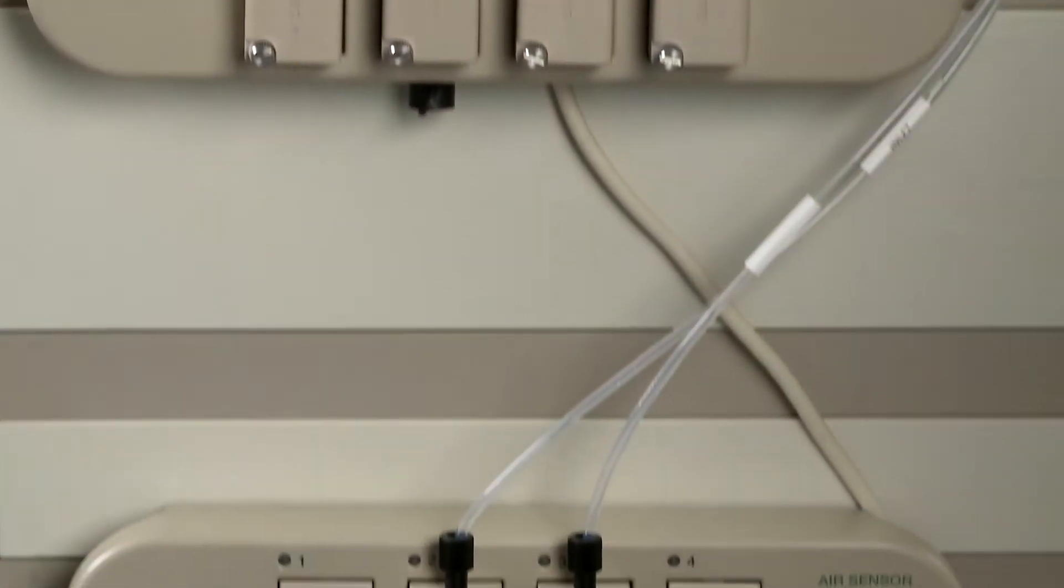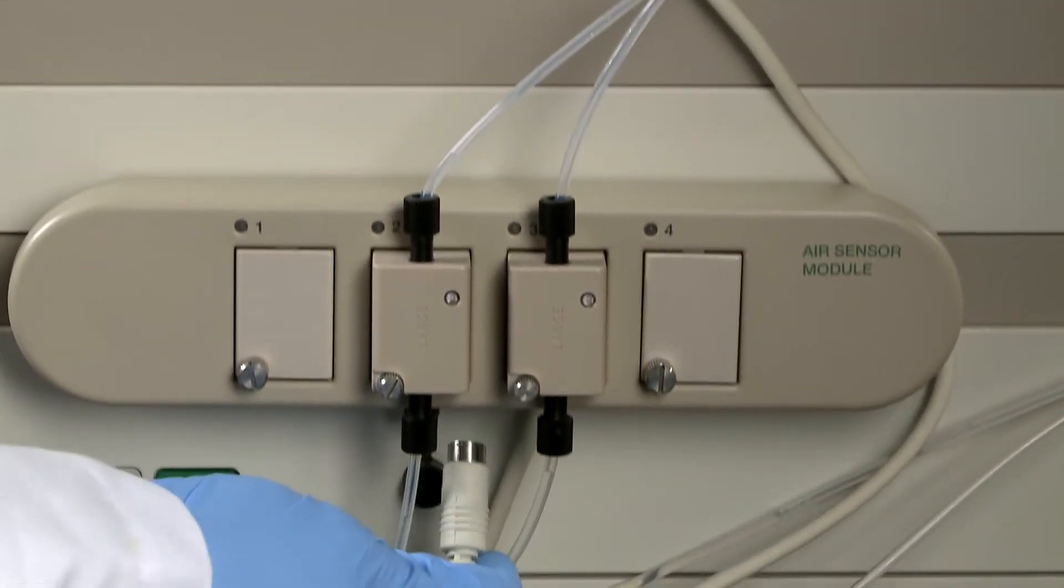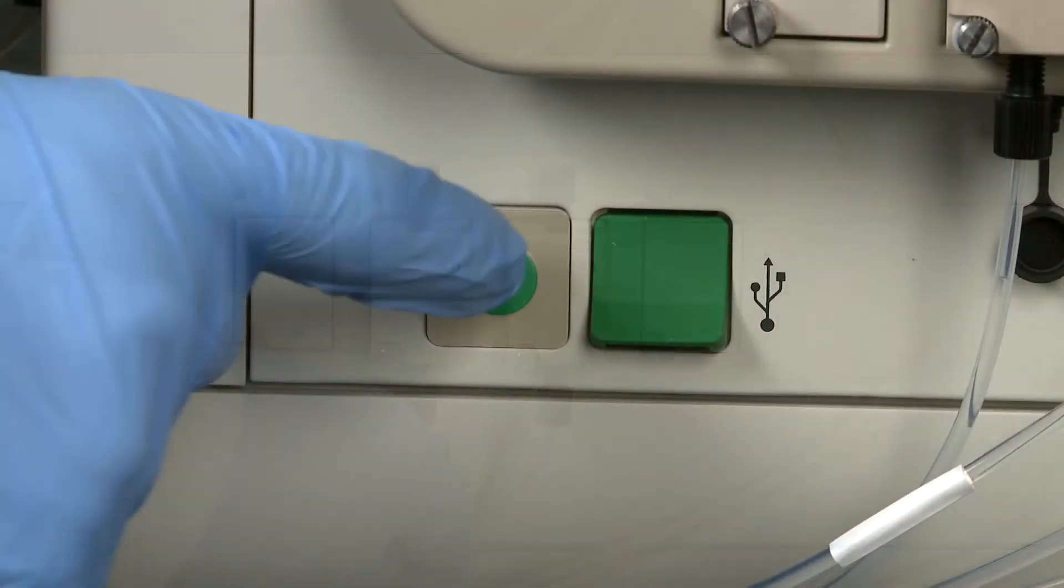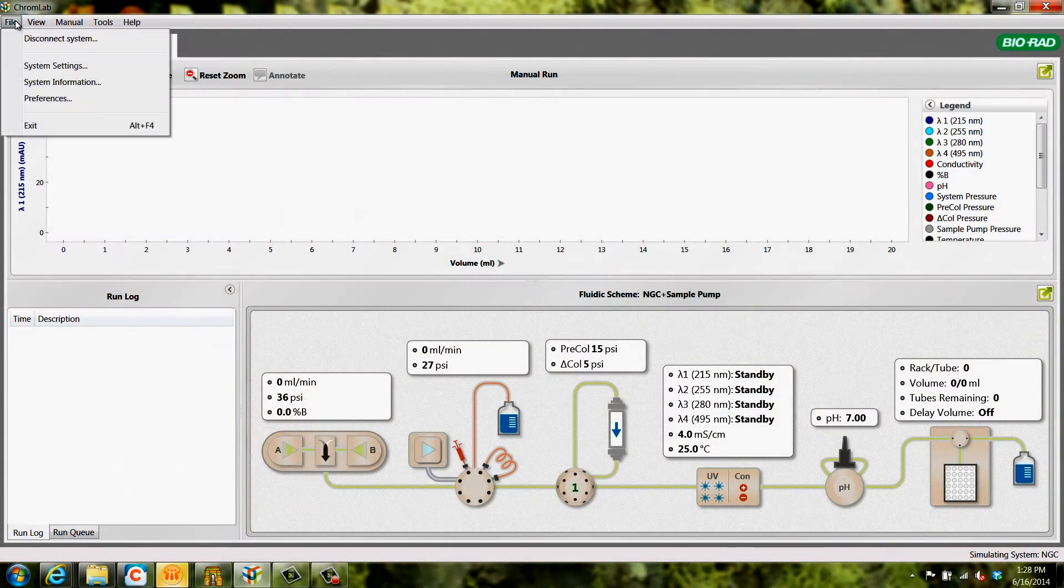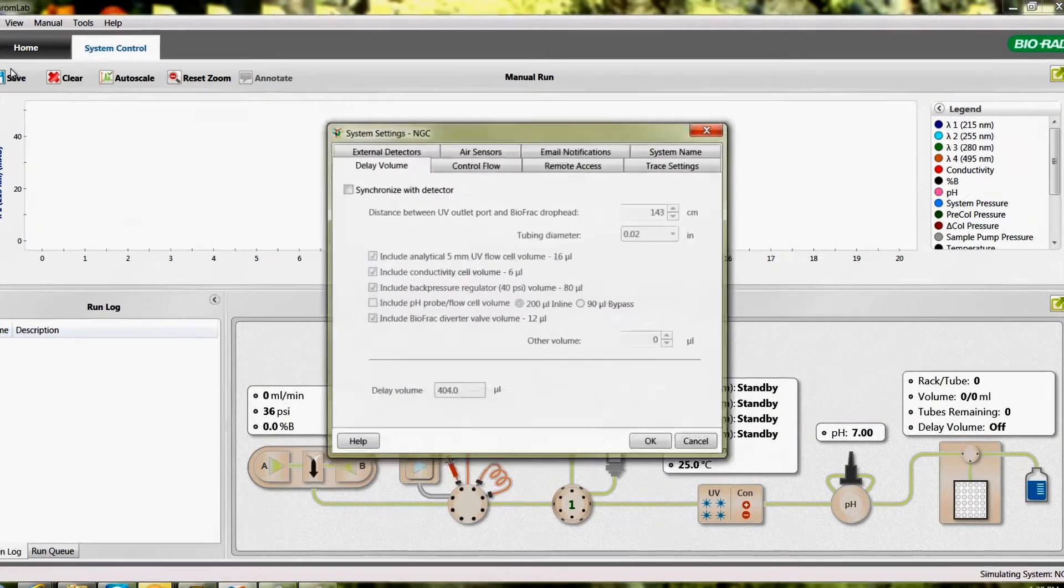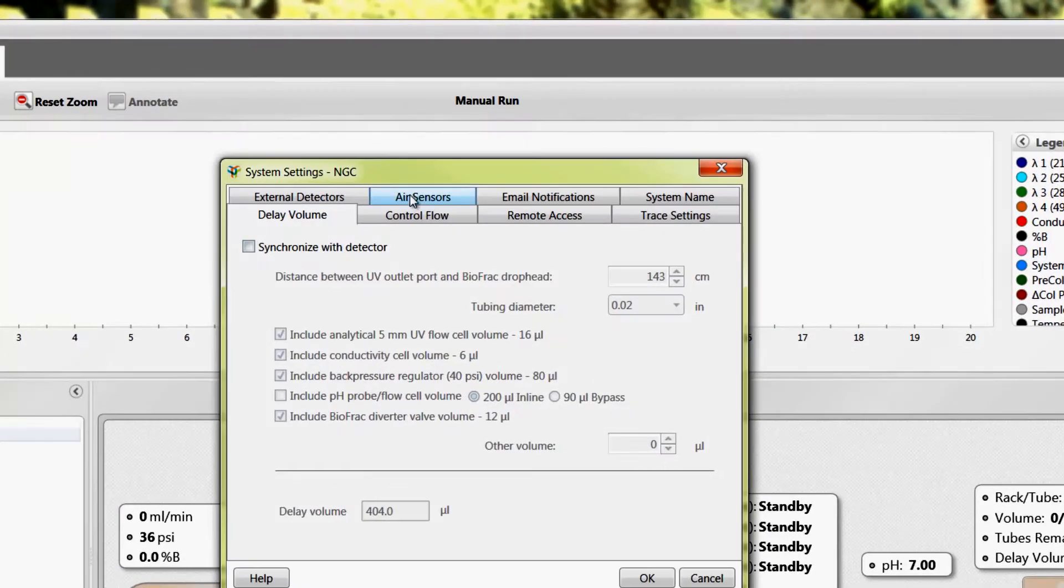Once the air sensor module is connected to the NGC and the air sensors are plumbed, the system can be powered on. Now, open ChromLab, enter the System Settings window, and click the Air Sensors tab.